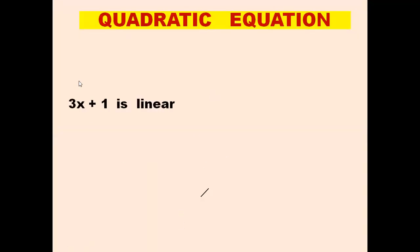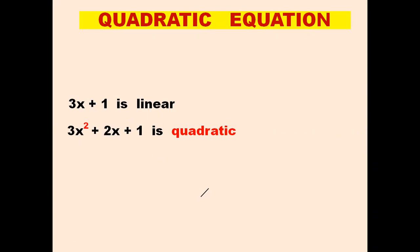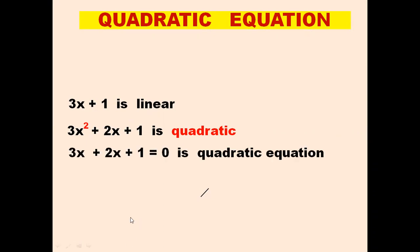Before moving to the main chapter, let's discuss something you already know. 3x plus 1 is linear in nature, but if we write 3x² plus 2x plus 1, we can see that it is not linear because the power of the variable x is 2, so it is quadratic in nature. When the power of the variable is 2 the term is quadratic, and if we add equals to 0 — that is 3x² plus 3x plus 1 equals 0 — it becomes a quadratic equation. So the highest power of the variable should be 2 in a quadratic equation.